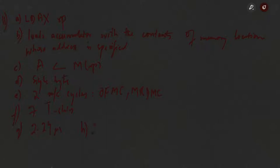LDAX RP has only two variations: LDAX B, where B means the BC register pair, and LDAX D, where D means the DE register pair. The HL register pair is not used with this instruction — for HL we have already discussed other instructions like LHLD and SHLD. No flag is affected.